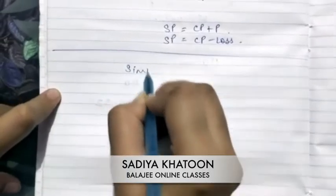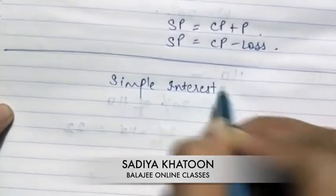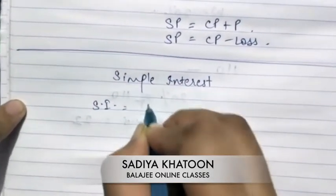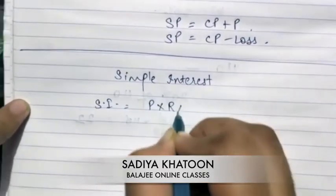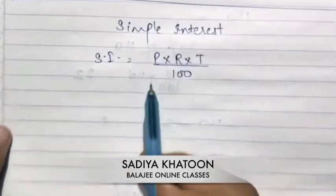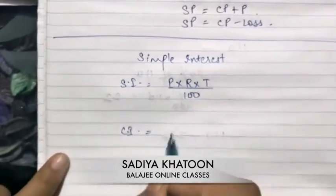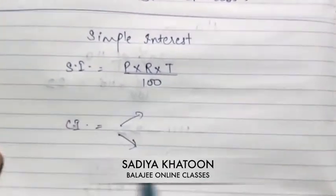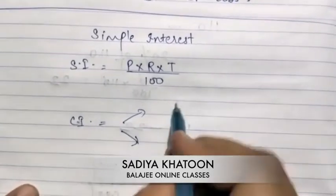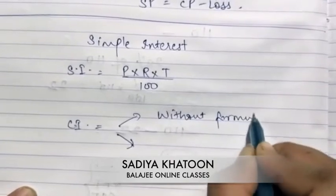The next topic is simple interest and compound interest. Simple interest is calculated by multiplying principal, rate, and time divided by 100 — that is SI equals P times R times T divided by 100. For compound interest, there are two methods: one without formula — calculated step by step — and one using the formula.